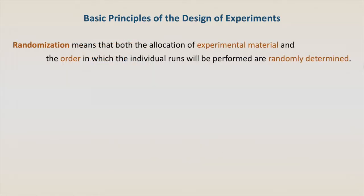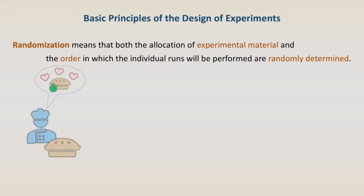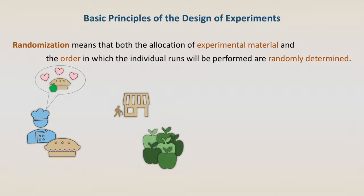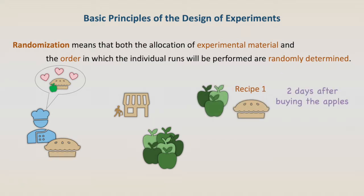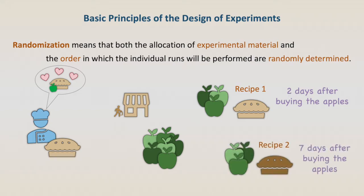Randomization means that both the allocation of experimental material and the order in which the individual runs will be performed are randomly determined. Take the example of a cooker who wishes to develop the best apple pie. First, the cooker goes to the market and buys a batch of apples. Then he uses half of the apples to make an apple pie using recipe 1 and the other half to make a pie using recipe 2.